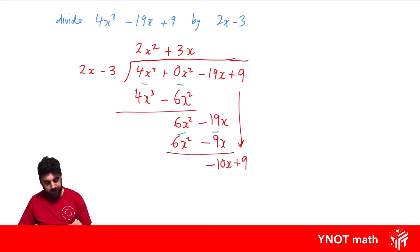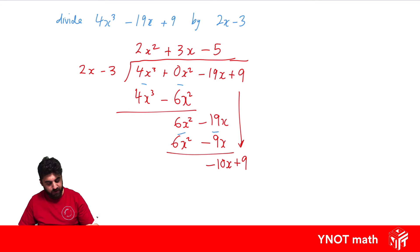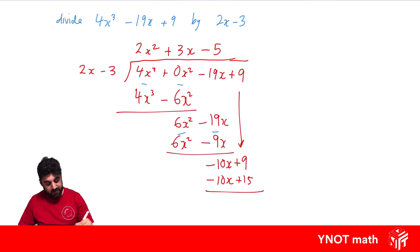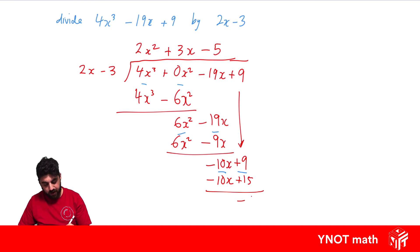How many times does 2x go into minus 10x? That would be minus 5. Multiply out: minus 5 times 2x gives minus 10x — they should always match up — and minus 5 times minus 3 gives positive 15. Subtracting: minus 10x minus minus 10x gives 0, then 9 minus 15 gives minus 6. This time we actually get a remainder.